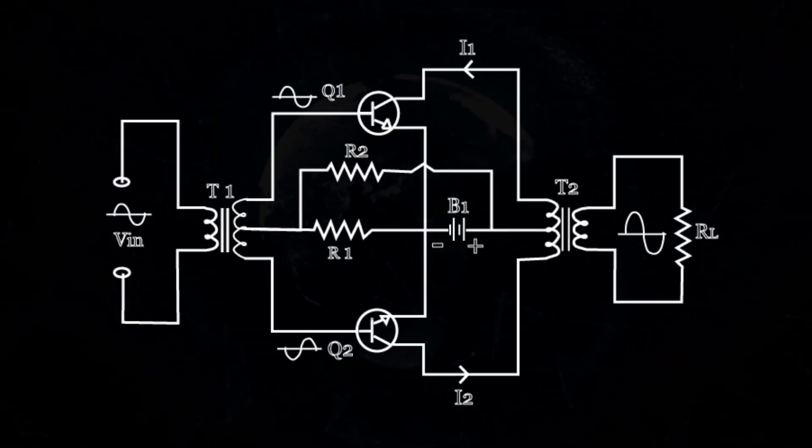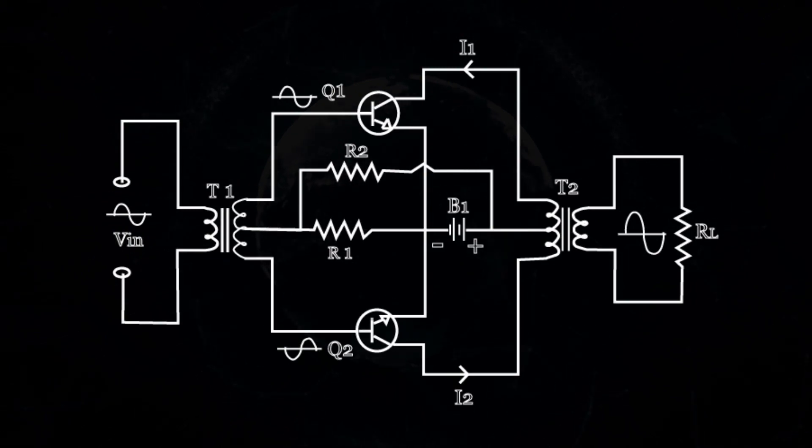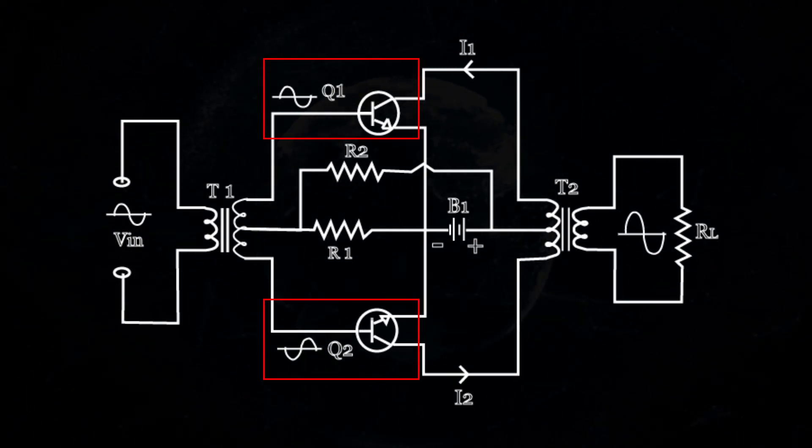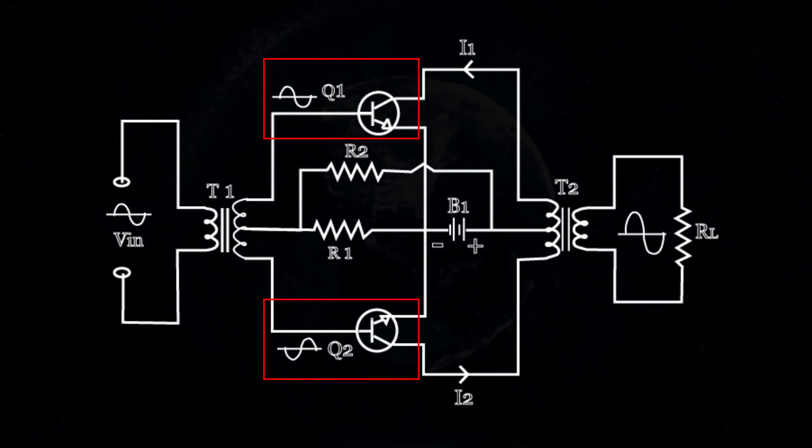The circuit diagram of a typical Class A push-pull amplifier is shown below. Q1 and Q2 are two identical transistors and the emitter terminals are connected together.